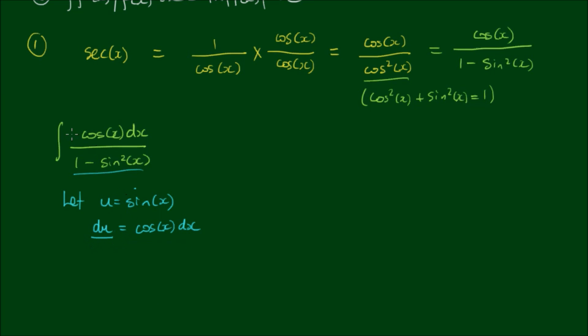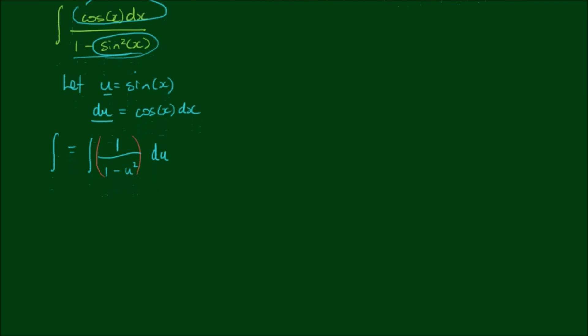So now I substitute du for cos x dx and u for sin x. The integral becomes the integral of du over 1 minus u squared. And again for a bit more clarity, this time I shall write du to the right and I'll put a 1 as the numerator. So this integral, 1 over 1 minus u squared, is what I'm going to separate out into partial fractions. Because 1 over 1 minus u squared, I can rewrite that as 1 over 1 plus u by 1 minus u. Because on the bottom here we have a difference of two squares.